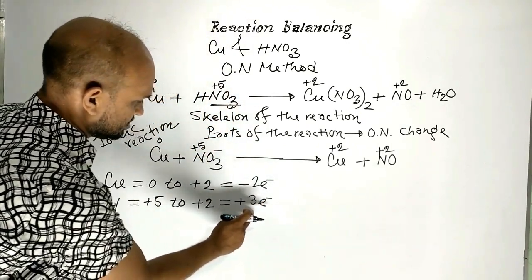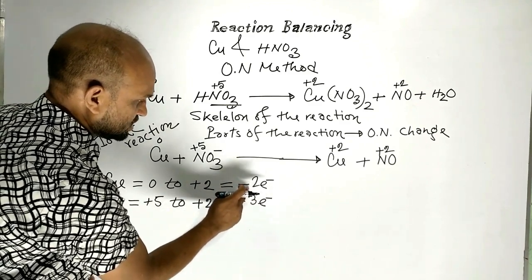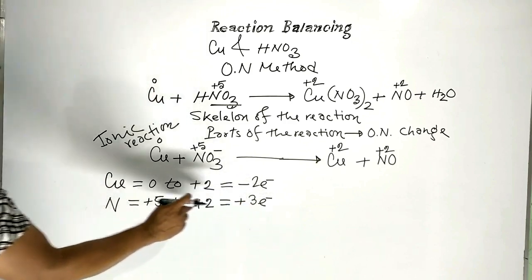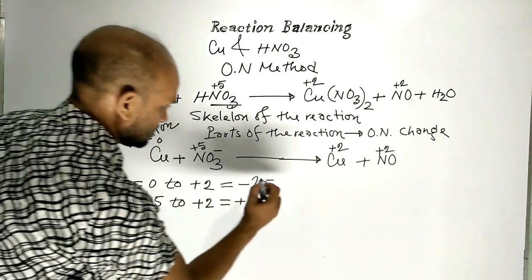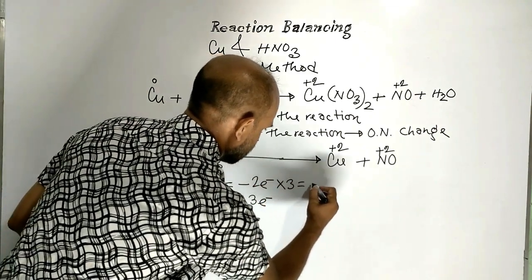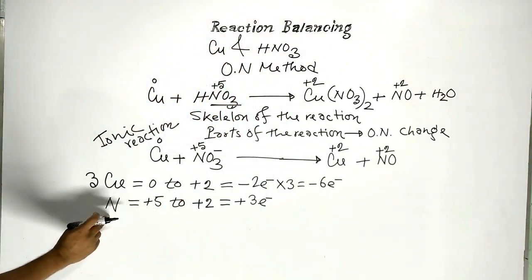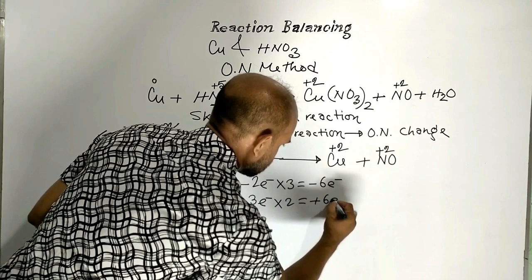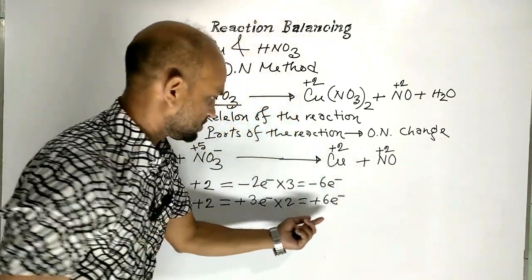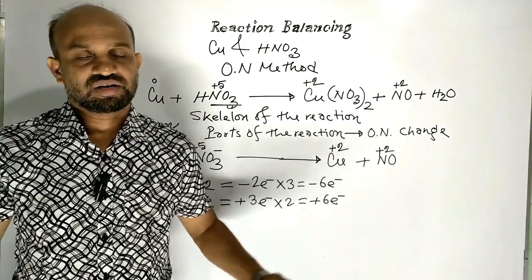Now let us equalize the number of electrons donated and accepted. We take 3 copper atoms, giving 3 × 2 = 6 electrons donated. We take 2 nitrogen atoms, giving 2 × 3 = 6 electrons accepted. The number of electrons donated and accepted are now equalized.